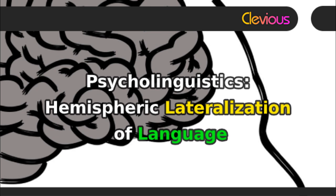It has thus been concluded that the right hemisphere is most often responsible for the prosodic and emotional elements of speech and language.